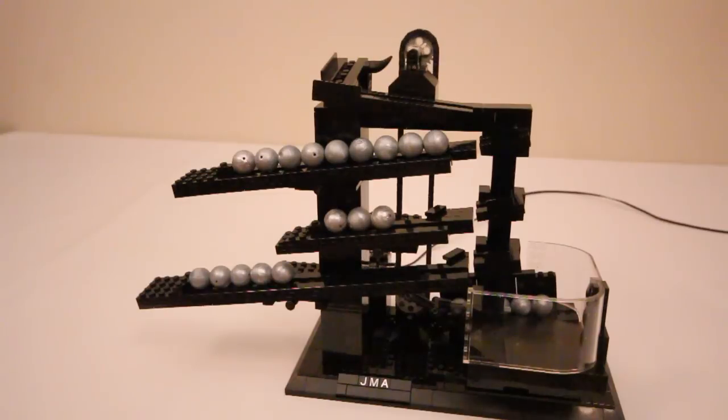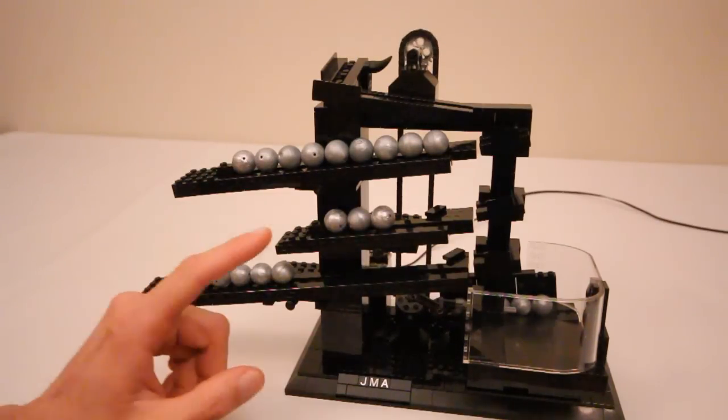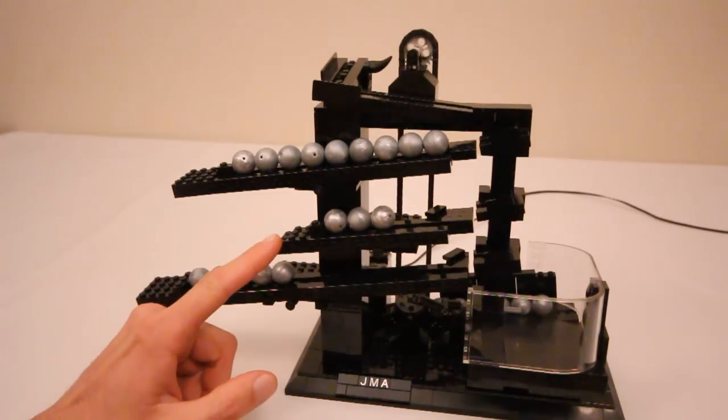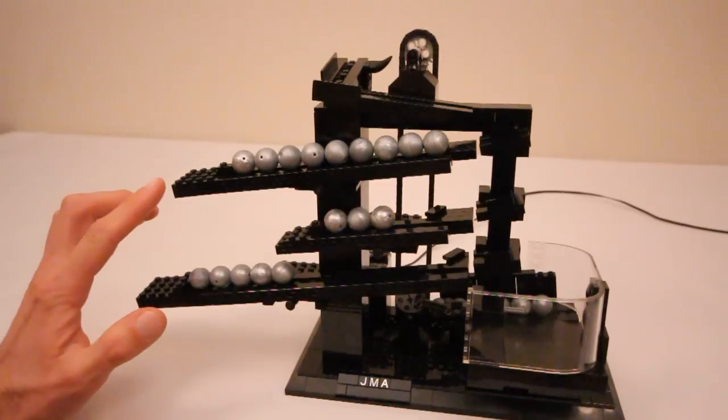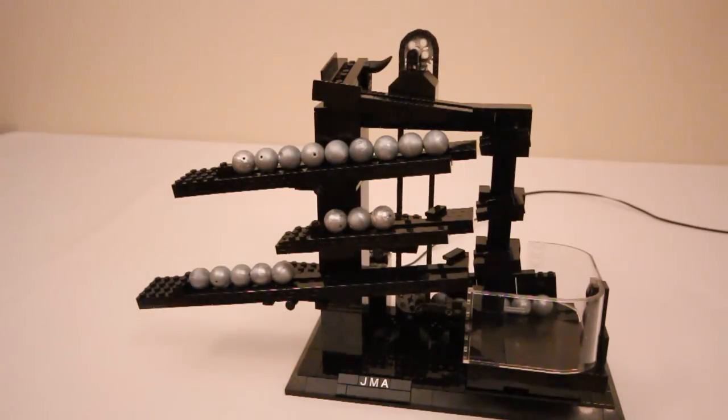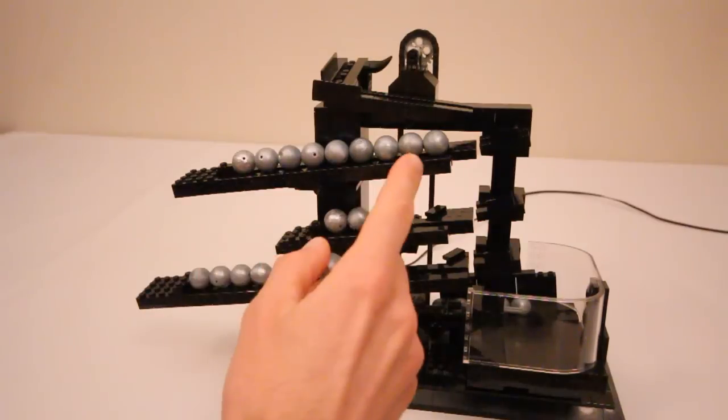Each ball on the bottom rail represents 1 hour, each ball on the middle rail represents 10 minutes, and each ball on the top rail represents 1 minute. So the current time is 5:30:09.